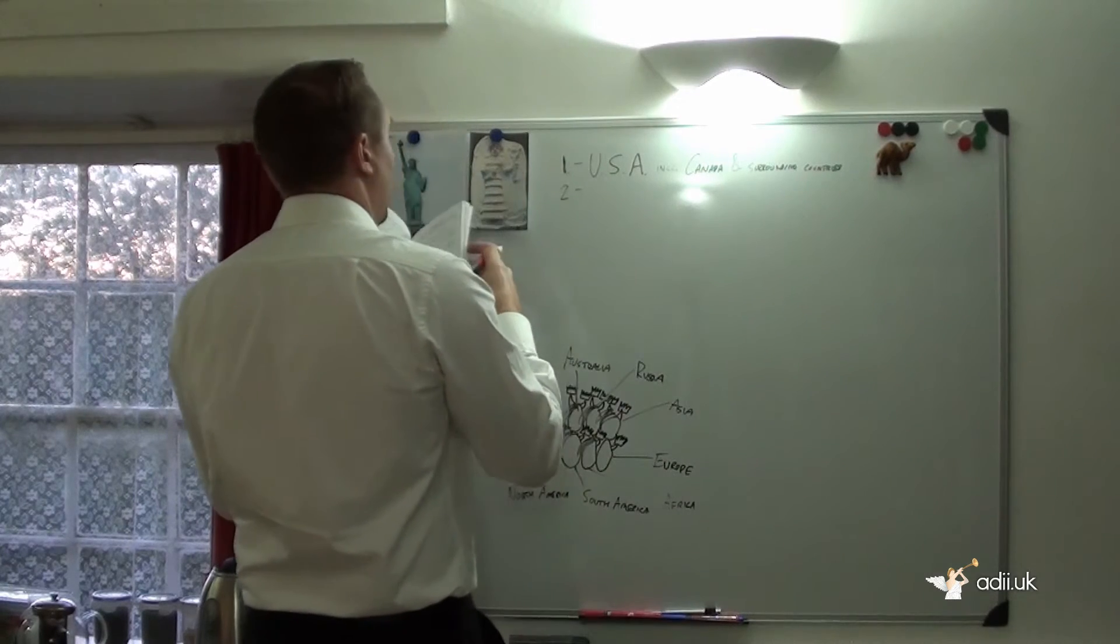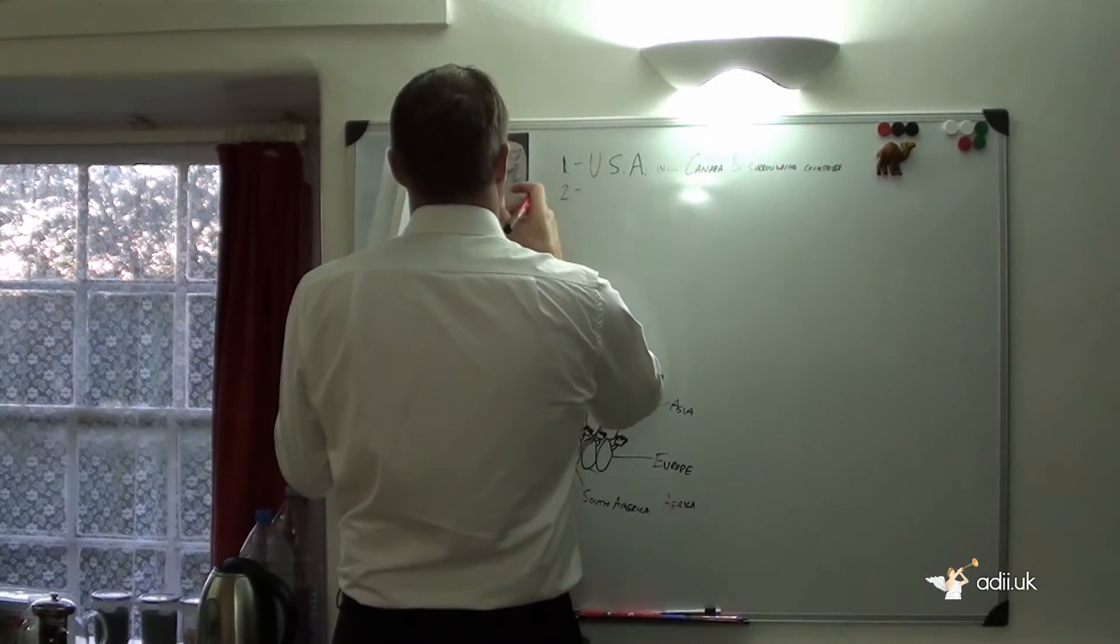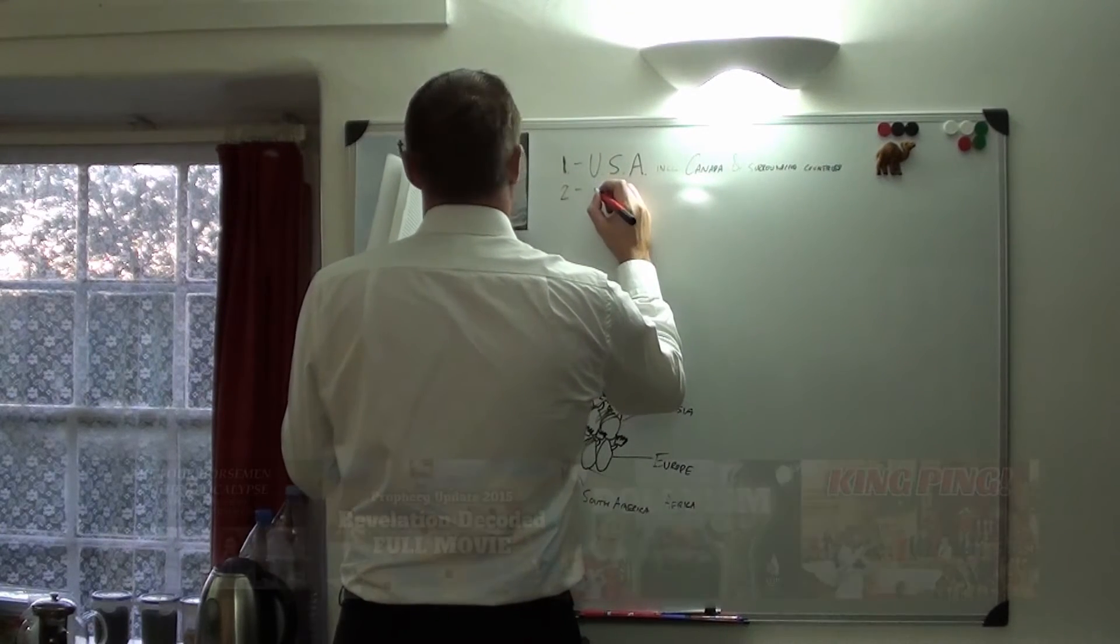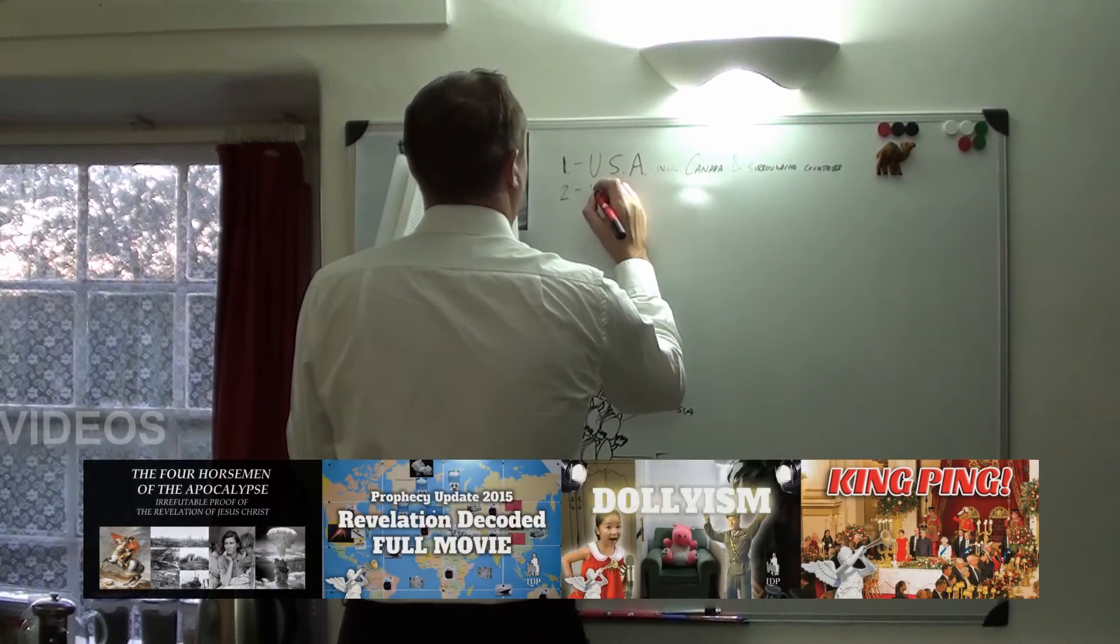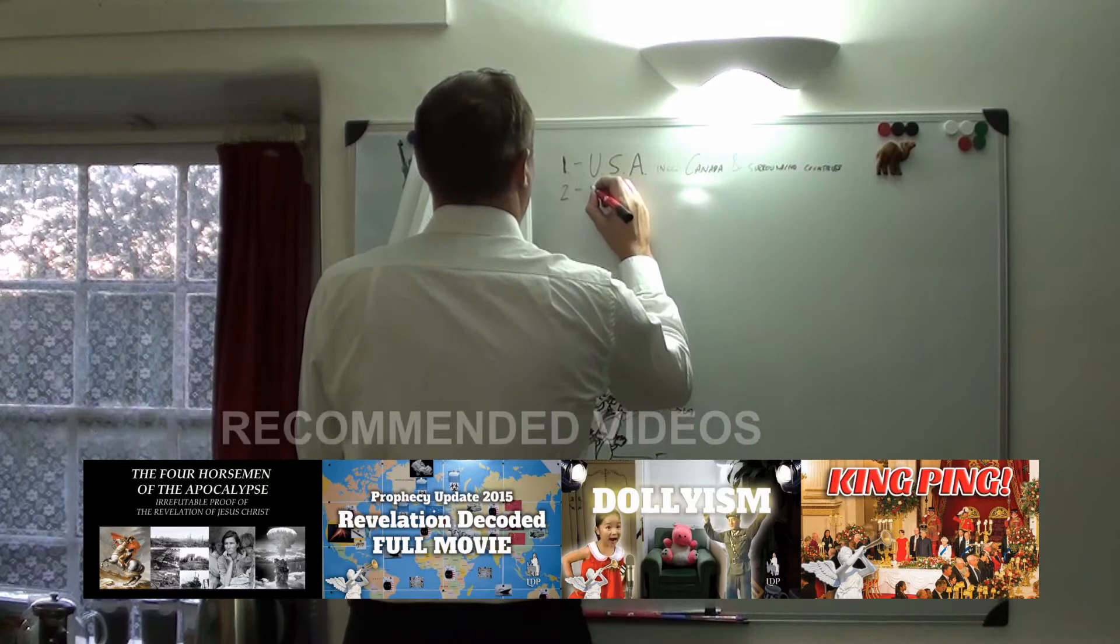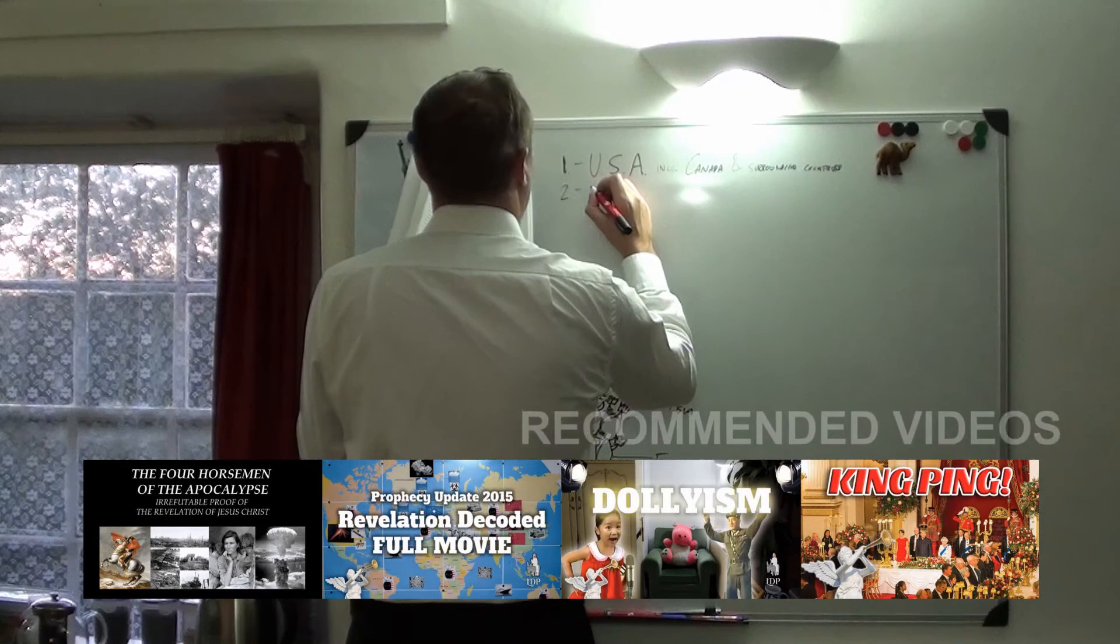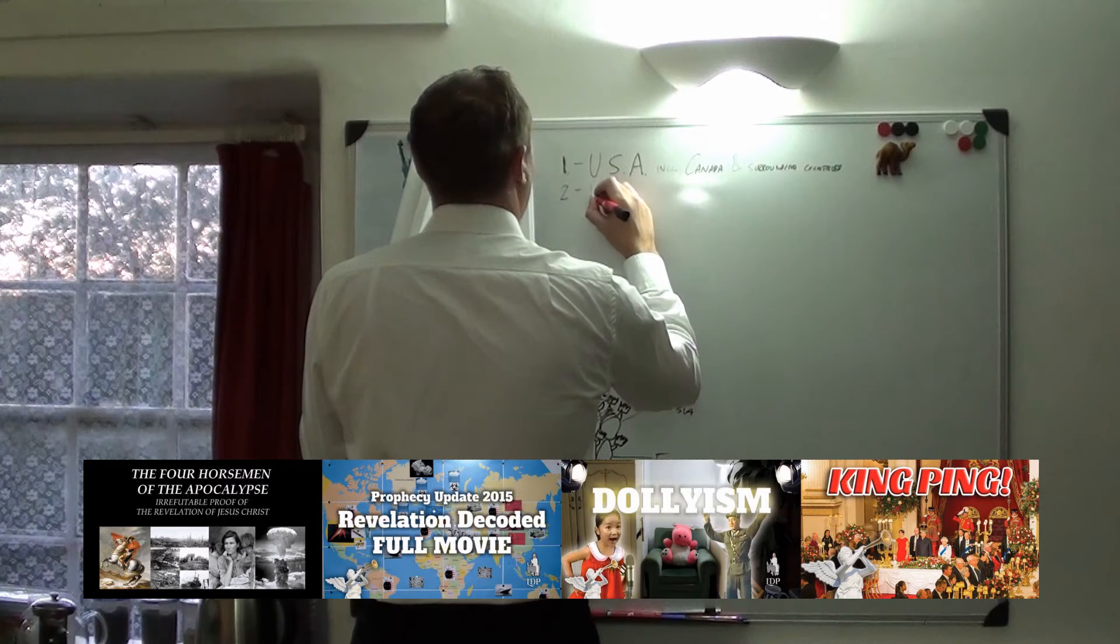This is too big a coincidence because John mentions seven heads, ten horns, and ten rulers, ten crowns on the horns. USSR, number two.